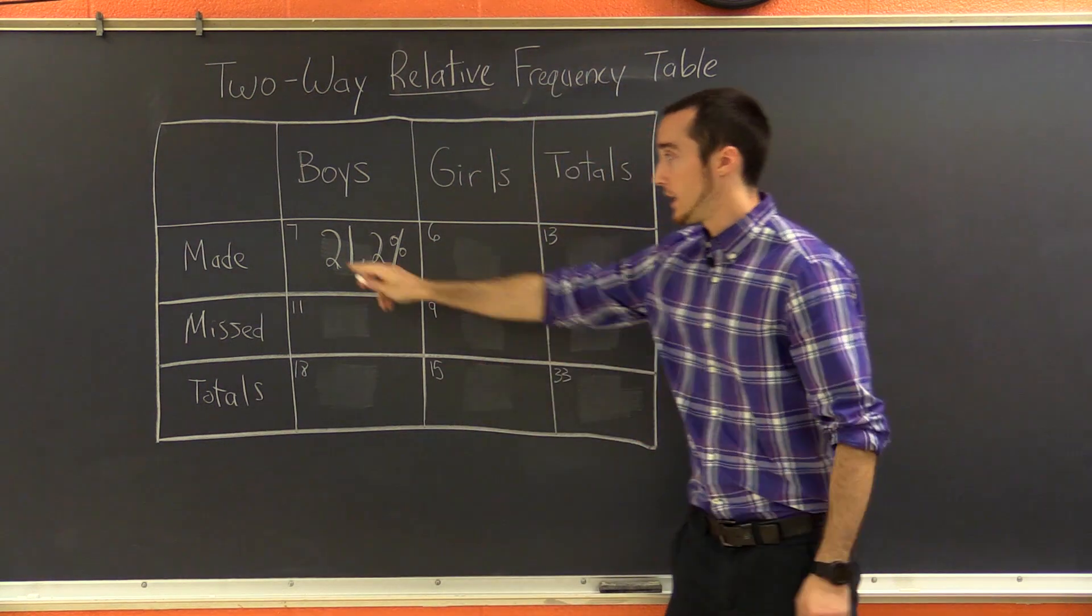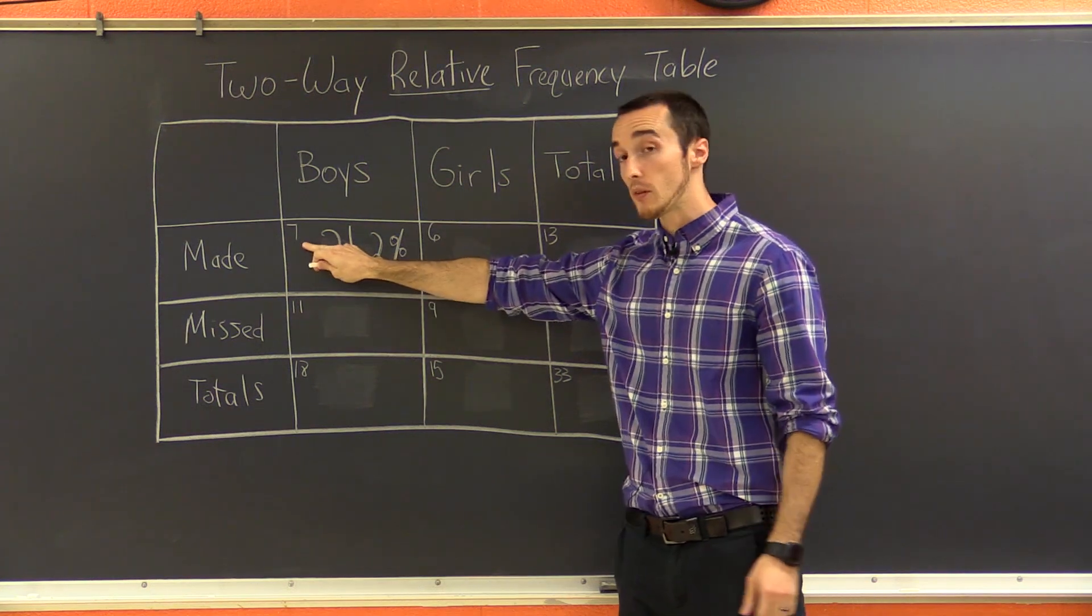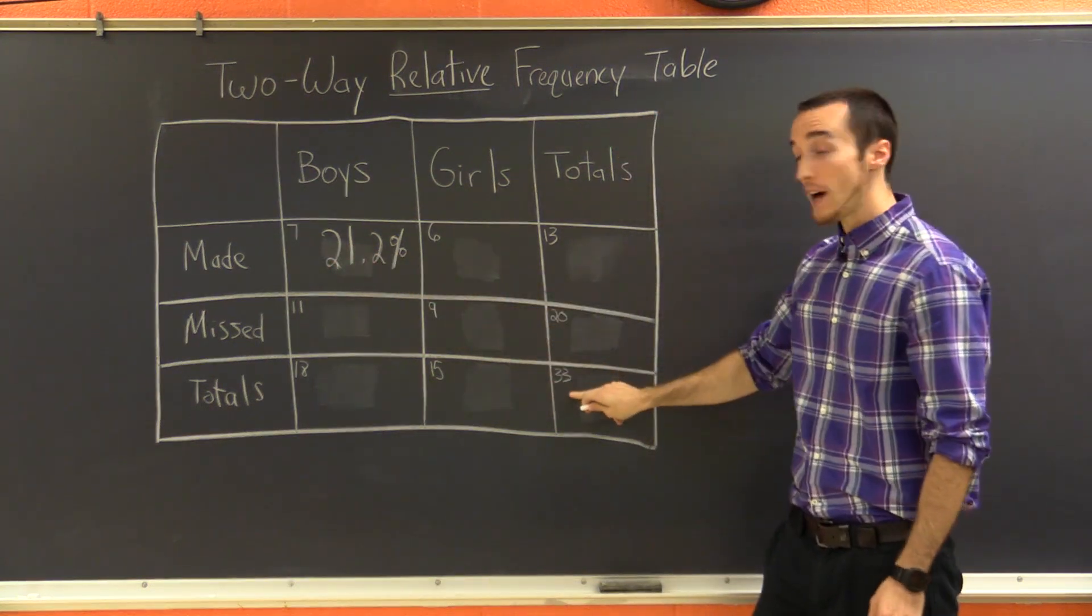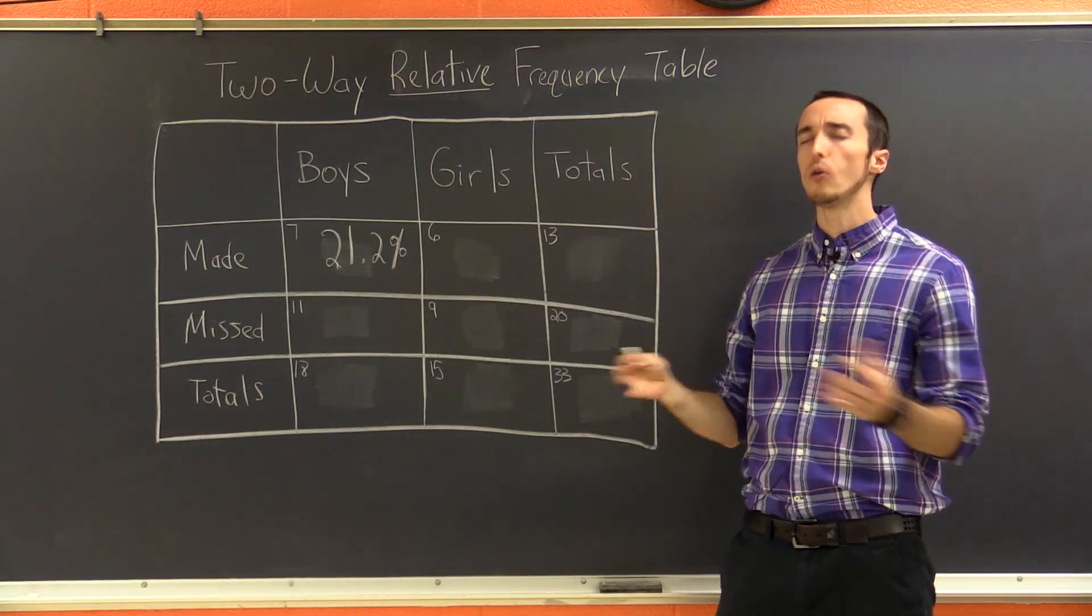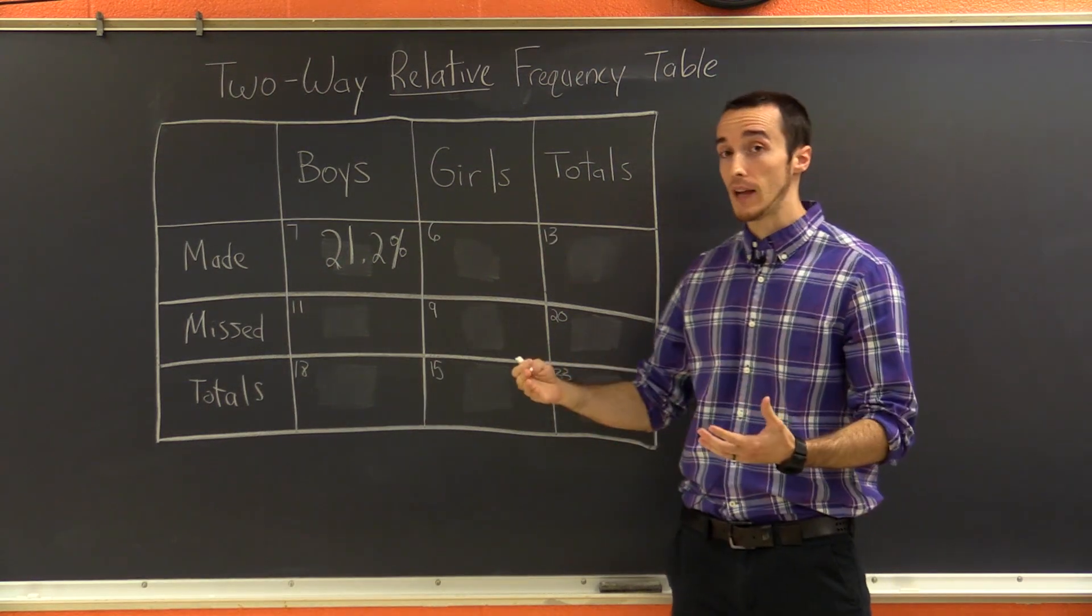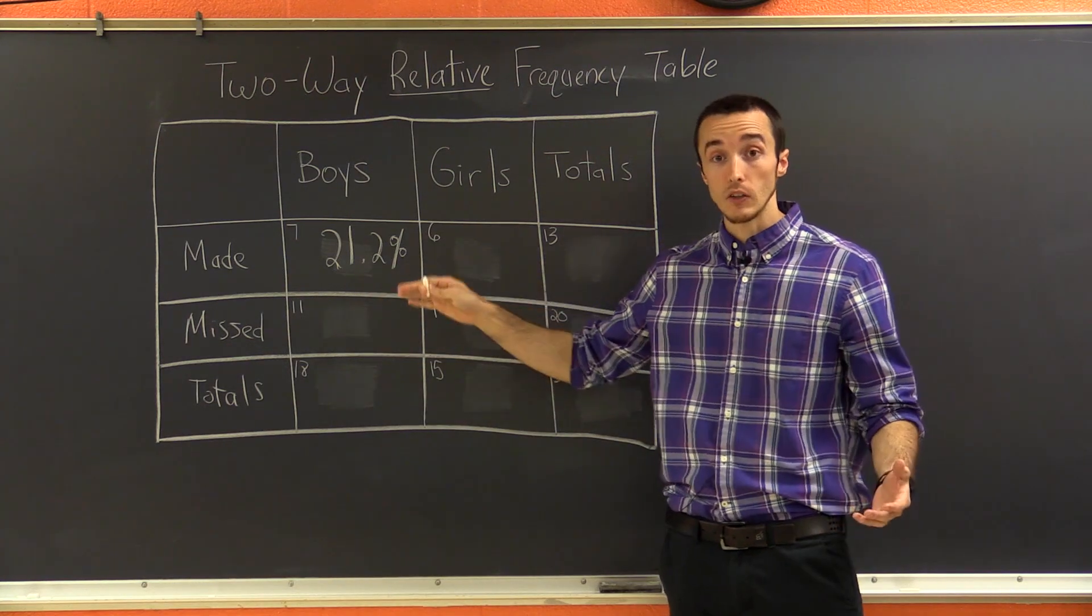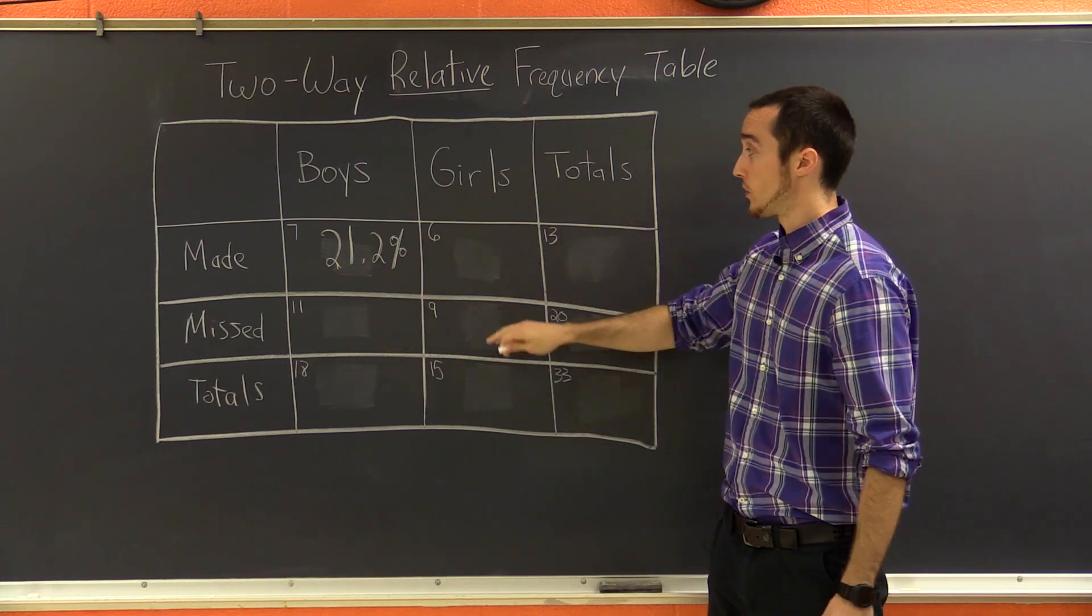And I got that by taking whatever number was in this category from my two-way frequency table. So there were seven boys who made a basket, and I divided it by the grand total, the total number of people in the class. Seven divided by 33, and then multiplied that number by 100, and I got 21.2%. So let's go ahead and fill in these other percentages.